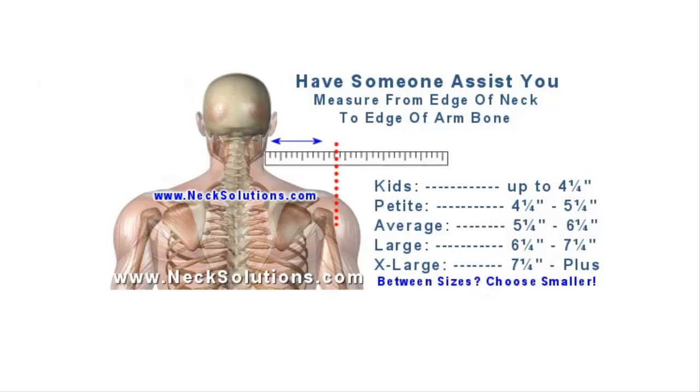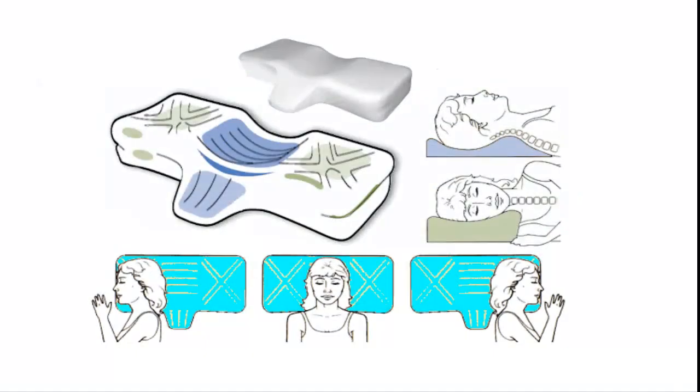To measure for proper sizing, hold a ruler level and measure from the neck to the outside tip of the shoulder bone. Choose the smaller size if your measurement falls on the line between two sizes. The unique density of the foam creates a softness which allows for an extremely comfortable yet supportive night's sleep.